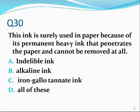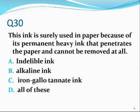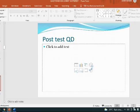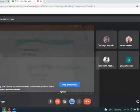Number thirty. This ink is used in paper because of its permanent, heavy ink that penetrates the paper and cannot be removed — or if it can be removed, it takes a long time. That is indelible ink. Even the ink used during elections is indelible ink — it cannot be removed.